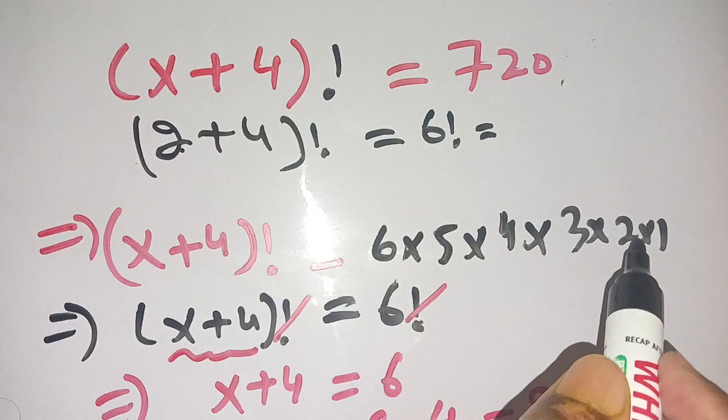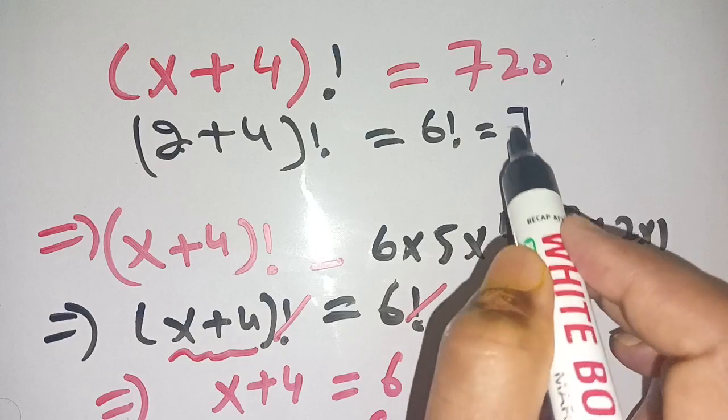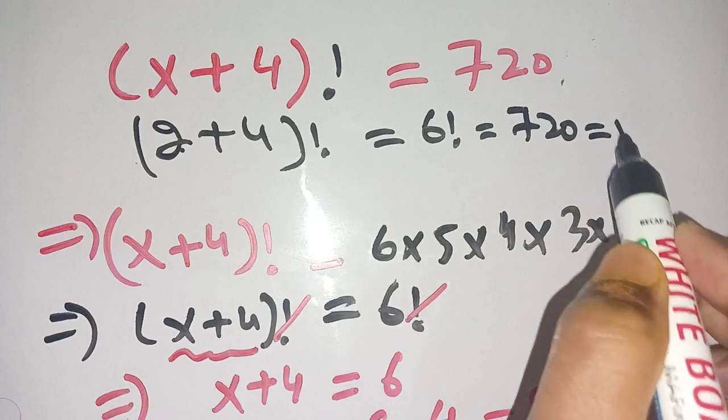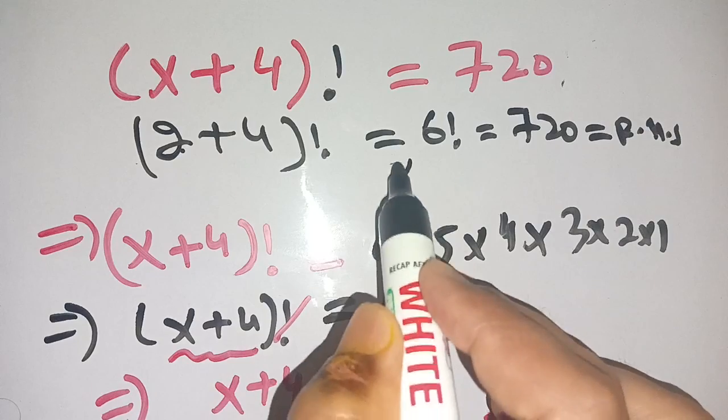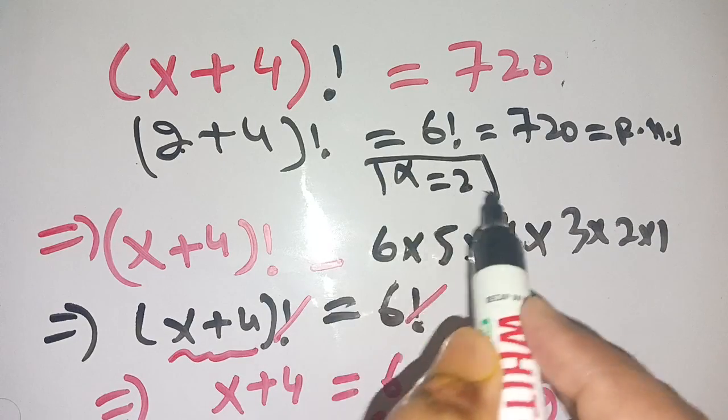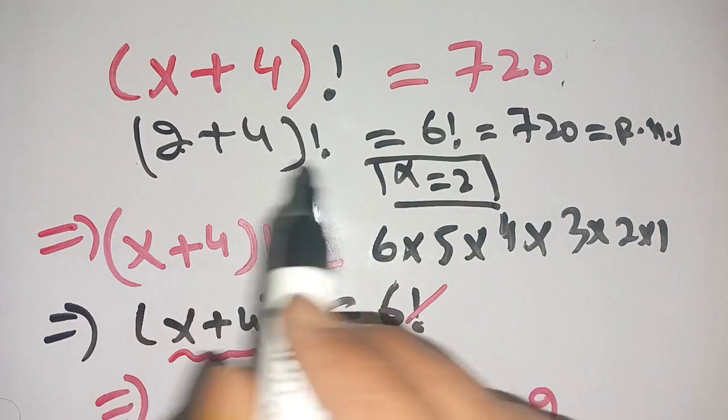This is equal to 720, which equals the right-hand side. This means that x is equal to 2 is the perfect value for this equation.